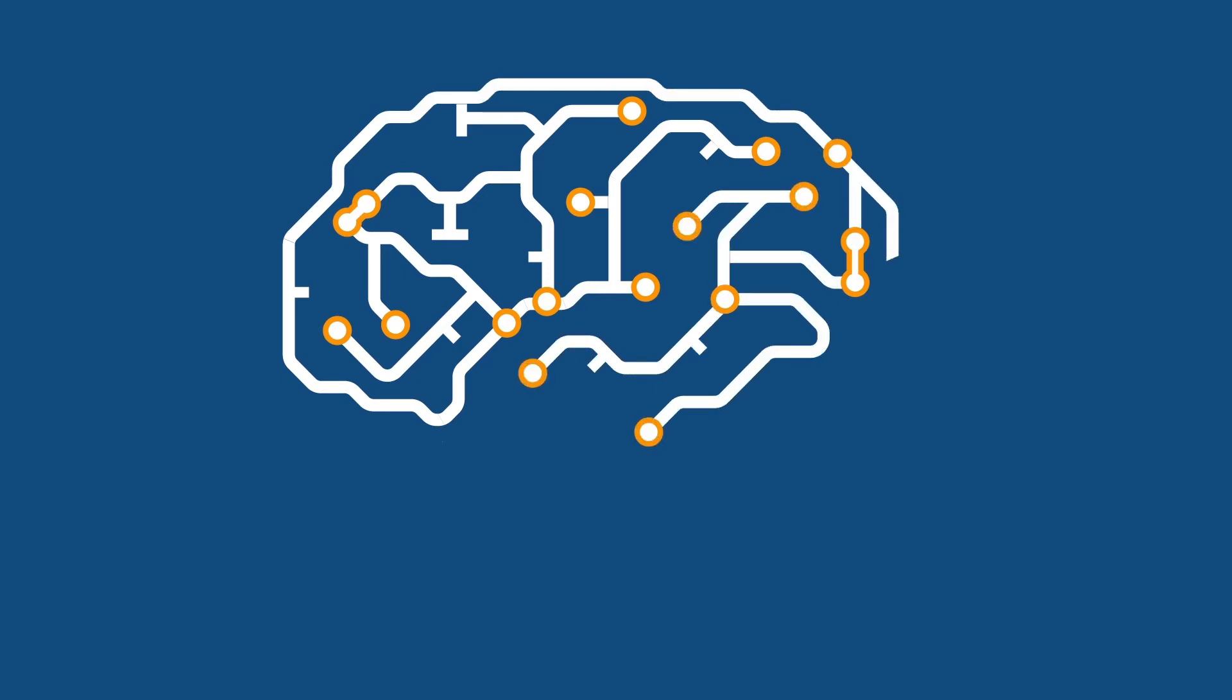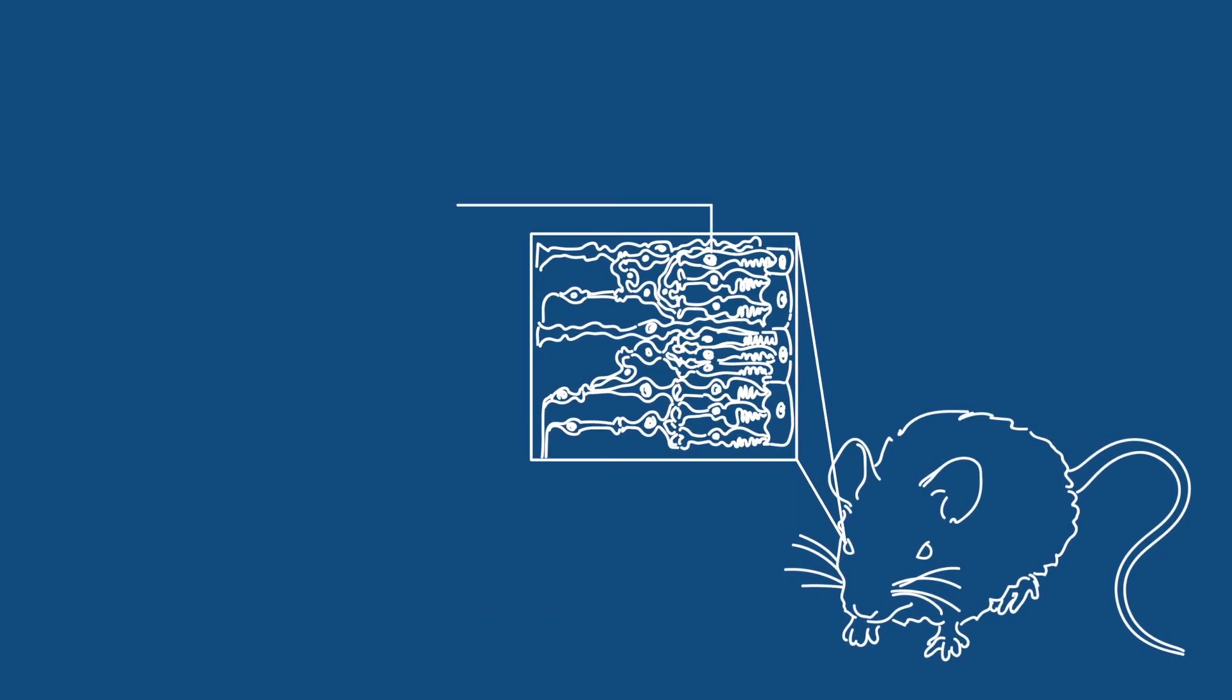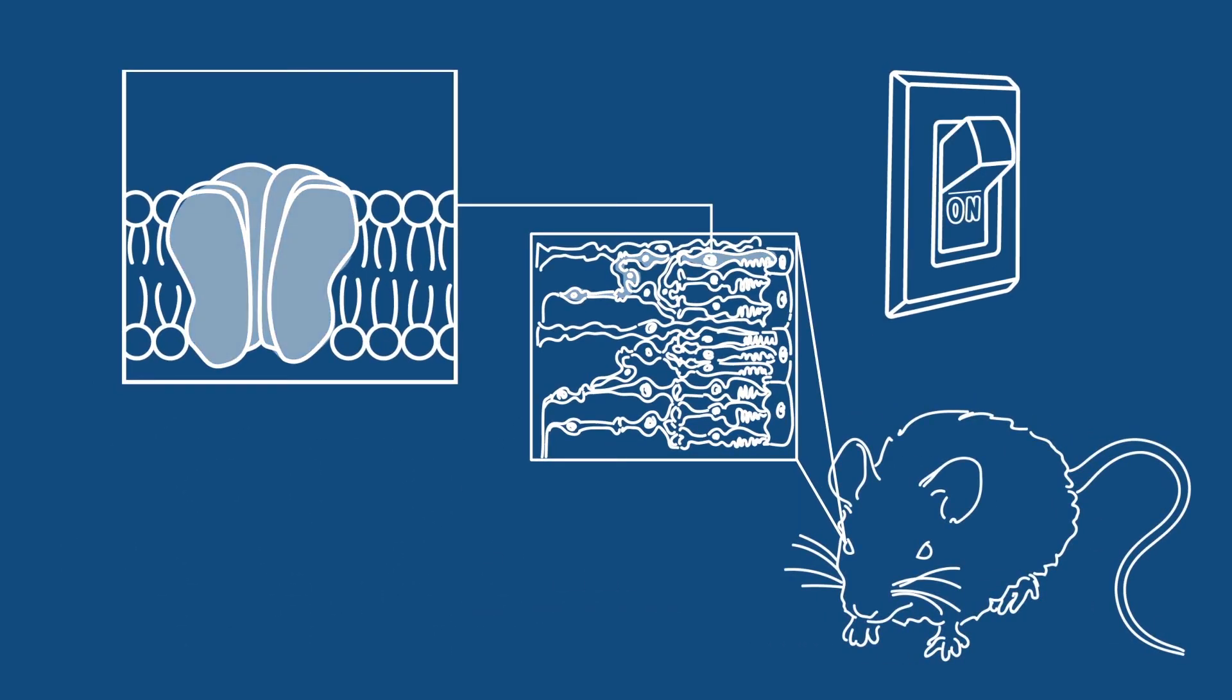What's more, optogenetics has the potential to advance our understanding of the brain in both health and disease. A study in blind mice, for example, found that adding channel rhodopsins to retinal neurons restored the animal's responses to light.